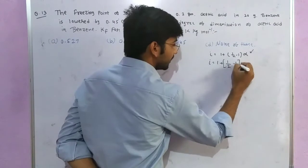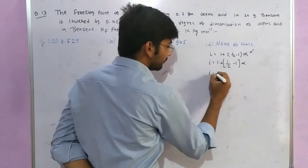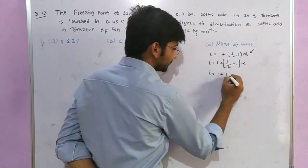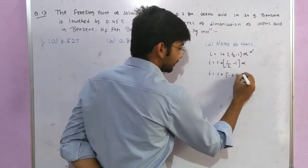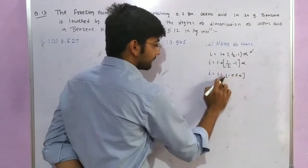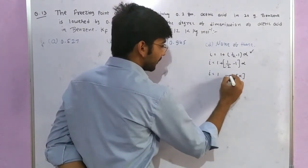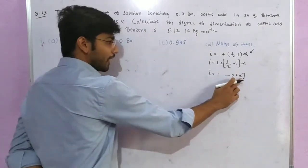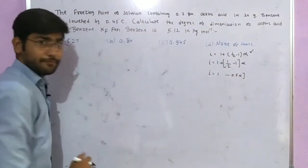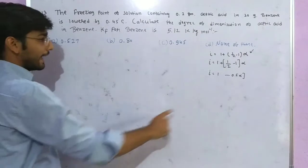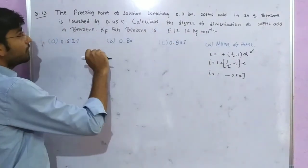This gives i equals one plus one upon 2 minus 1 into alpha, which simplifies to i equals one minus 0.5 into alpha. Now we need to calculate i.